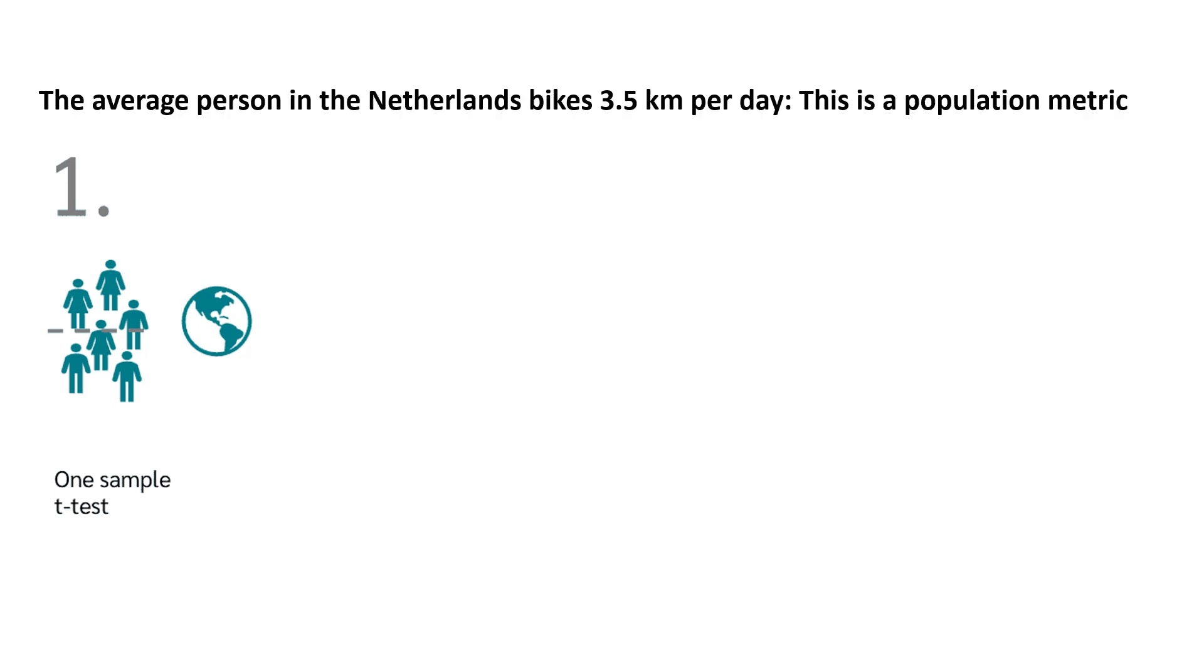An example would be if I know that the average person in the Netherlands bikes 3.5 km per day. This is information that is freely available for me to find out. I don't have to calculate this or conduct any research myself to know this. All it took was a quick look on Statista.